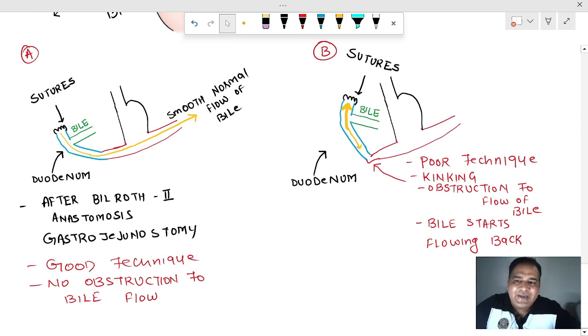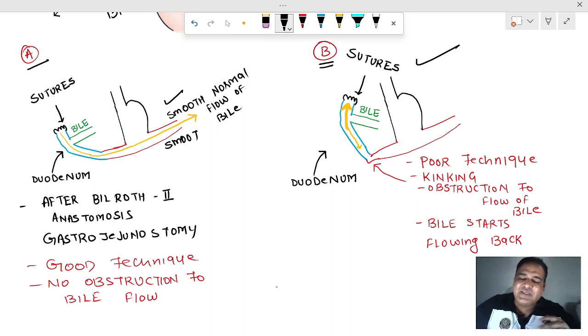The inquisitive minds may be wondering that how did the duodenum stump blowout occurred in the first place? The image A, that's the surgery done by a good surgeon with a good technique. There is no obstruction to the flow of bile. The bile flow is smooth. But let's say, the surgery is not done with good technique as you can see in the image B. What will happen? There will be kinking, there will be bending, there will be edema, there will be scarring.